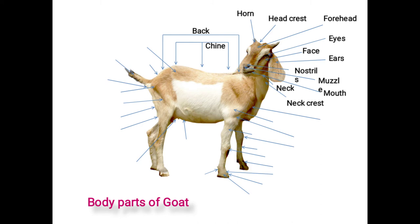Next is the body. This portion is situated between the hump and sacrum. It includes the following subparts. Back: the portion situated between the hump and sacrum supported by ribs is called the back. Chine: the portion just behind the hump and up to the point where the last two ribs meet. Next is the loin: a triangular portion between the chine and sacrum called the loin.